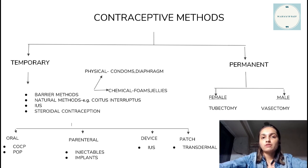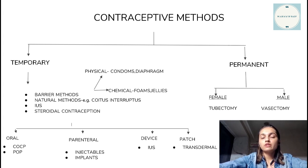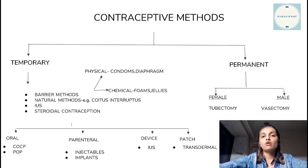Coming to the natural methods of contraceptives, examples are the calendar method, which avoids intercourse during the fertile period of the menstrual cycle — that is around the time of ovulation — and coitus interruptus, which is the withdrawal of the penis before ejaculation.